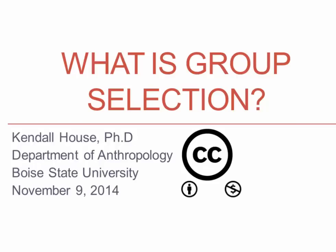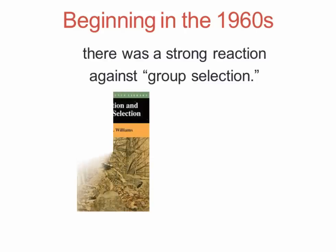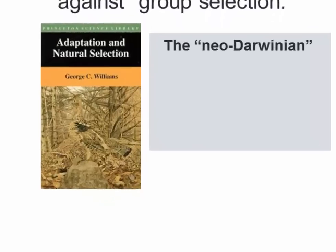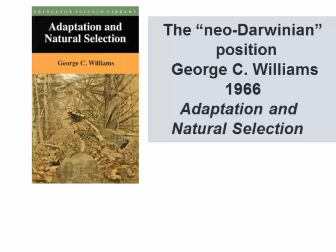This presentation is called 'What is Group Selection?' The discussion of group selection really takes off in the 1960s, when there was a strong reaction against group selection that gave rise to what's known as a neo-Darwinian position. This was articulated most fully by an evolutionary biologist named George Williams in a 1966 book called 'Adaptation and Natural Selection.'